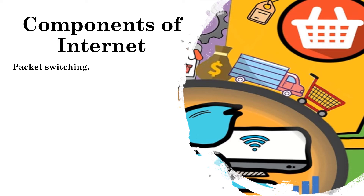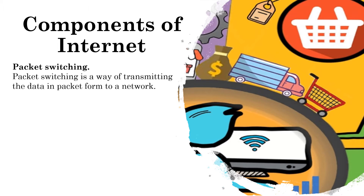Packet switching is a way of transmitting data in packet form over a network. The data is divided into small pieces of variable length, which are called packets, to transmit the file quickly and efficiently over the network and reduce the transmission latency.